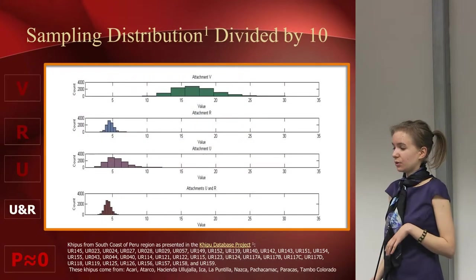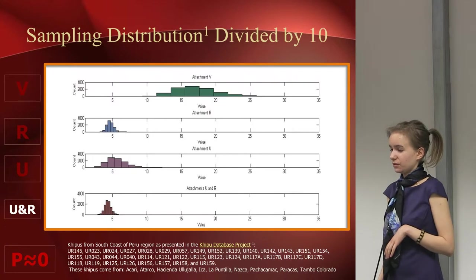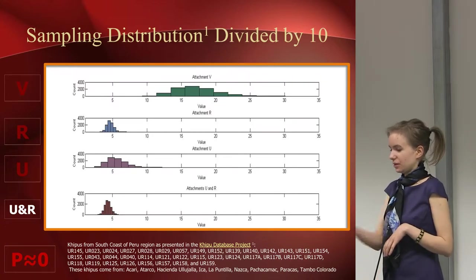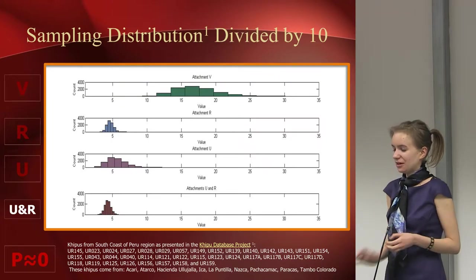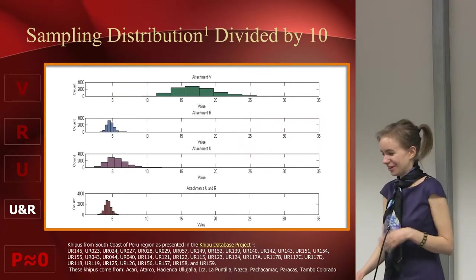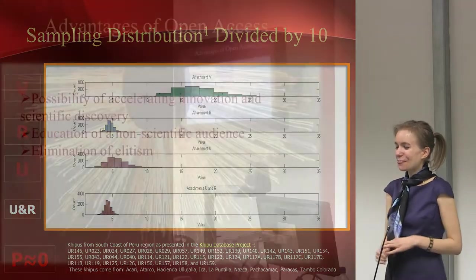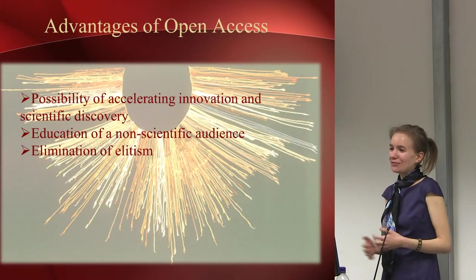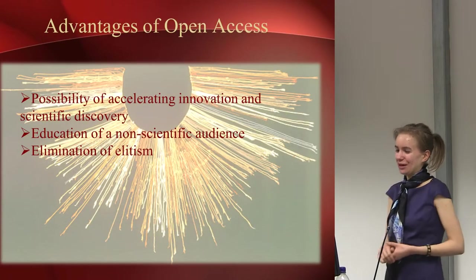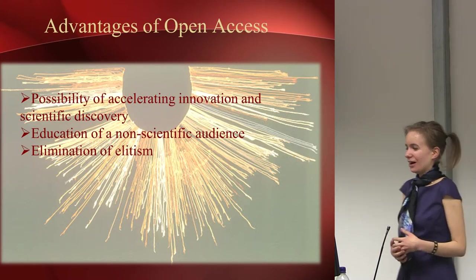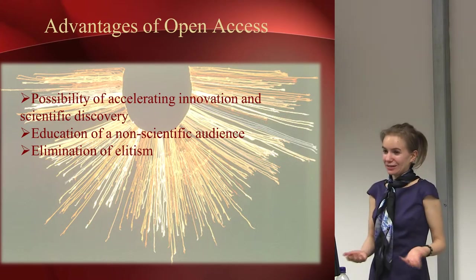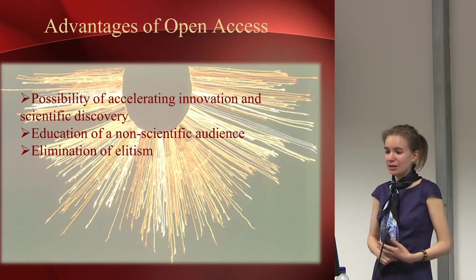Unfortunately we don't have a kipu Rosetta Stone to claim what that pattern actually means, but it could represent debit or credit, or something that was predominantly higher — perhaps labor, since the Incas were big fans of counting labor. From the hard data we can see this is a recurrent pattern of V being significantly higher. I then did another sample and the same thing happened — V also stood out.